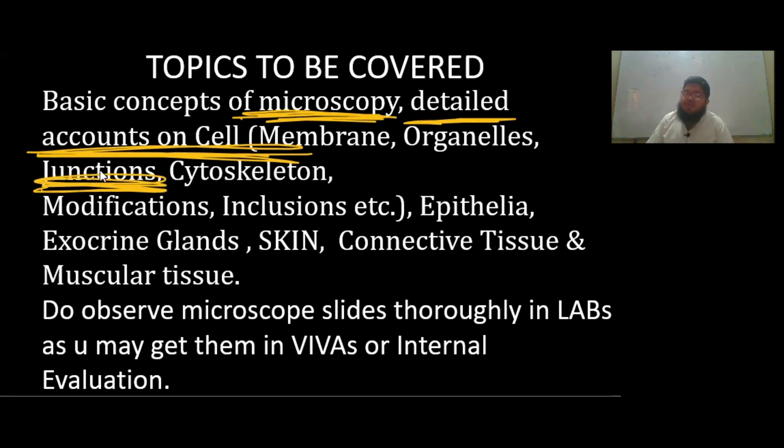For example, junctions is entirely new for you. You haven't done cell junctions. The cell membrane will also be covered in physiology and biochemistry, so this is the third time you'll be doing membrane. Organelles will be covered in almost all the subjects. Junctions will be covered specifically in histology and a bit in anatomy. Cytoskeleton will also be in anatomy and histology. Then modifications—surface modifications basically—how epithelia are modified into other forms, specializations, whether they have cilia or secrete mucus, goblet cells, etc.